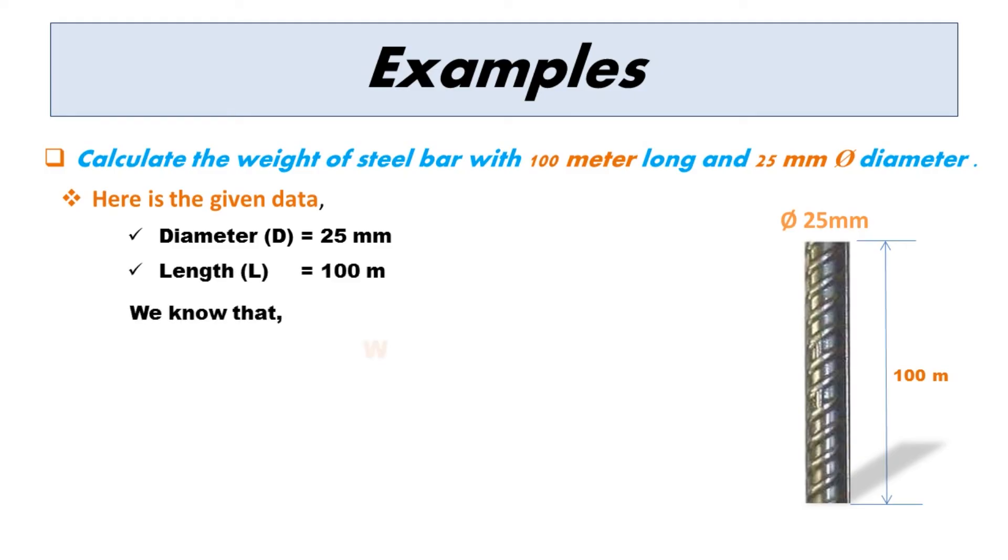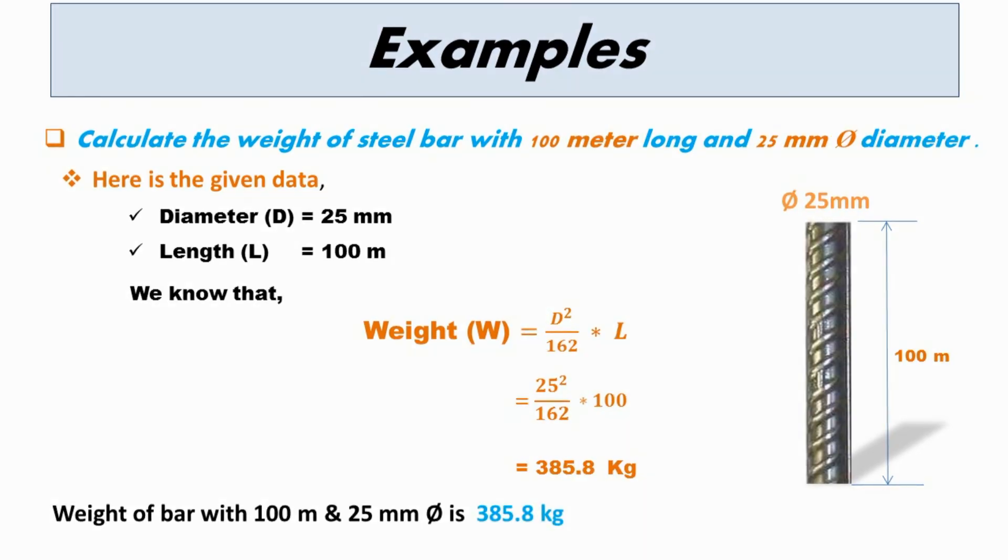Let's apply the formula of weight. So, the weight of bar with 100m and 25mm diameter is 385.8kg.